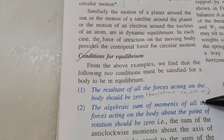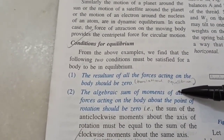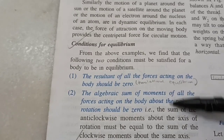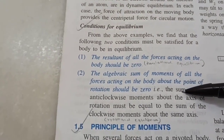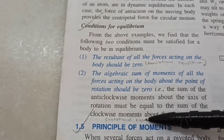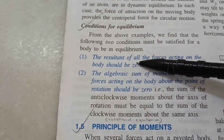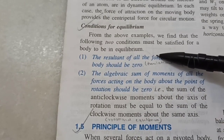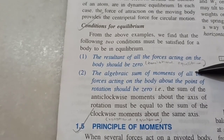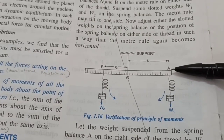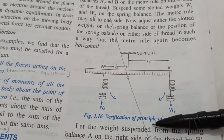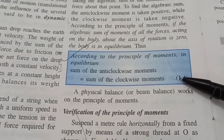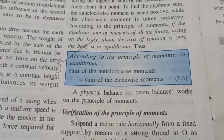The two conditions for equilibrium are: first, net force should be zero, which gives translational equilibrium; and second, total clockwise moment equals total anticlockwise moment, so net torque is zero, giving rotational equilibrium. For rotational equilibrium only the second condition applies, since in rotational motion the net force is not zero. When a body is in equilibrium, the total clockwise moment equals the total anticlockwise moment — this is called the principle of moments, used in numerical problems.